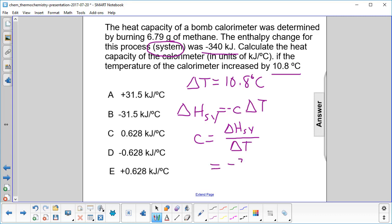Delta H is negative 340 kilojoules. Delta T is 10.8 degrees Celsius.